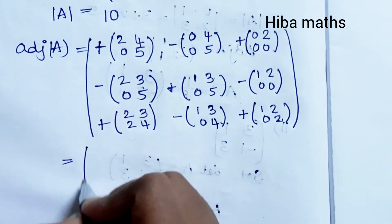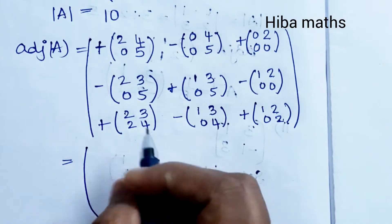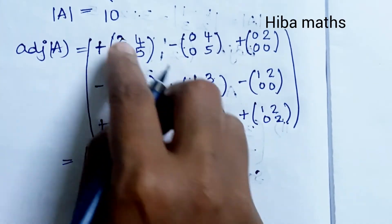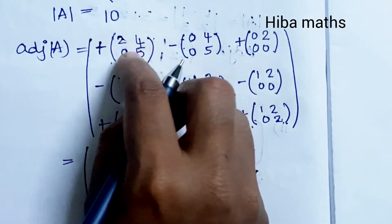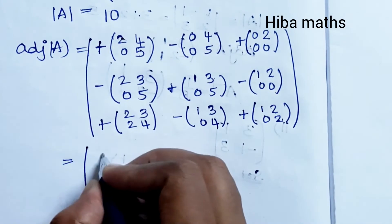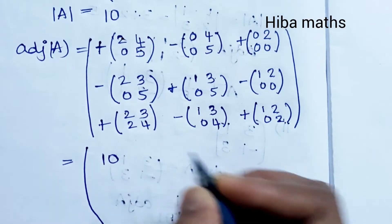Verifying cofactor calculations: 2×5 = 10, minus 0×4 = 0, giving 10. Then 0×5 = 0, minus 0×4 = 0, giving 0.